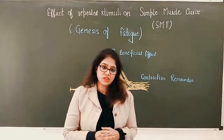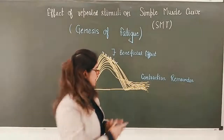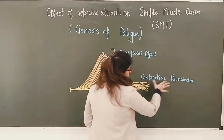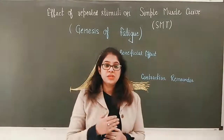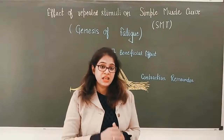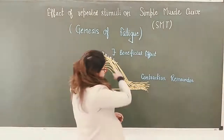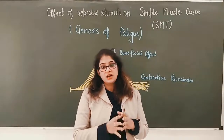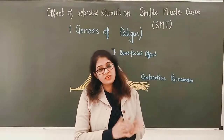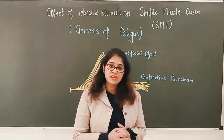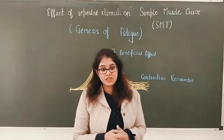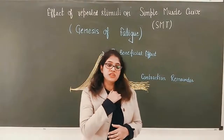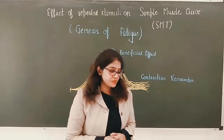The upward shifting of the baseline with repeated contraction is a phenomenon also known as contraction remainder. When fatigue sets in, the muscle is not able to relax completely - there is incomplete relaxation. This occurs because relaxation requires ATP for detachment of actin and myosin, and during fatigue there is decreased supply of ATP. This leads to incomplete relaxation, causing the contraction remainder or upward shifting of the baseline of the curves.